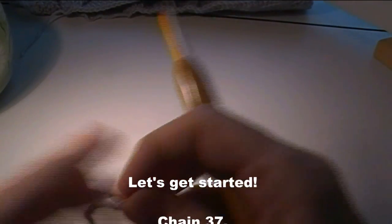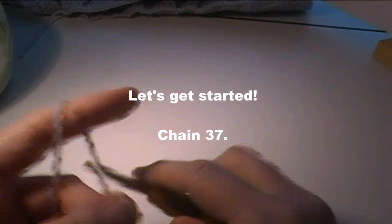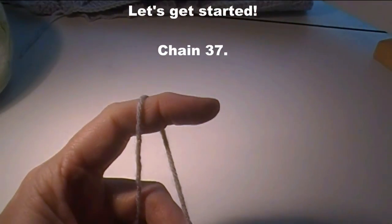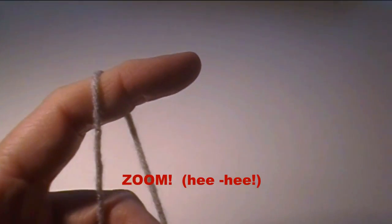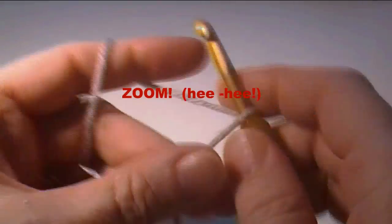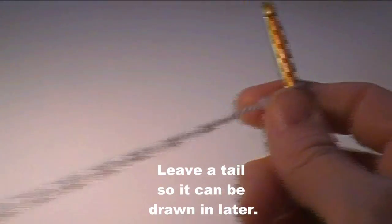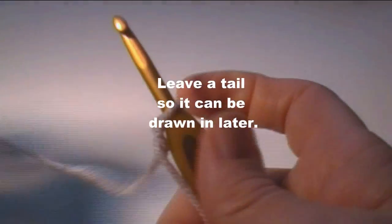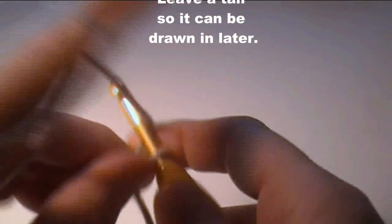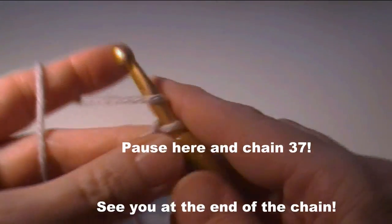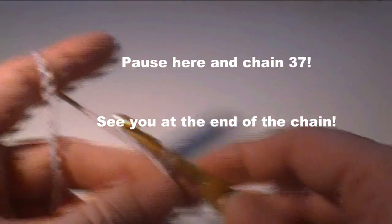So what we're going to do is get started. We're going to chain 37 and I'm going to zoom in here a little bit. Leave a little bit of a tail so you can weave it in later. I'm going to go ahead and chain 37 and I will see you at the end of the chain.